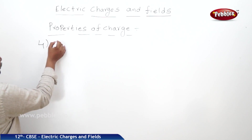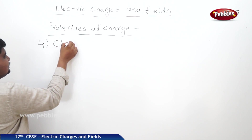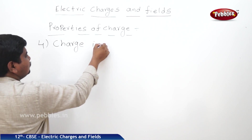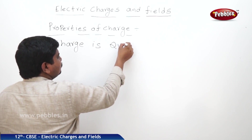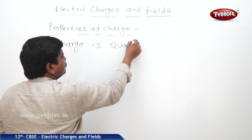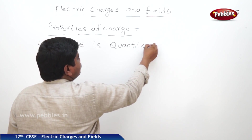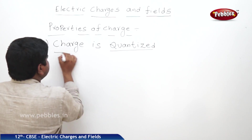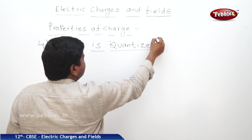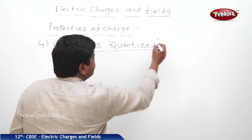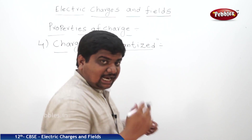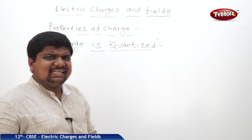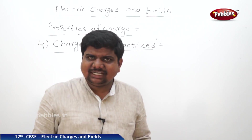See the fourth property: charge is quantized. Charge is a physical quantity, and this physical quantity is quantized. What is the meaning of quantization of a physical quantity?